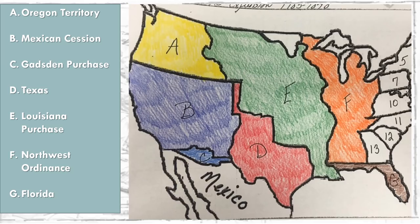Which letter would the Louisiana Purchase be on this map of the United States? If you said F, you would be correct.